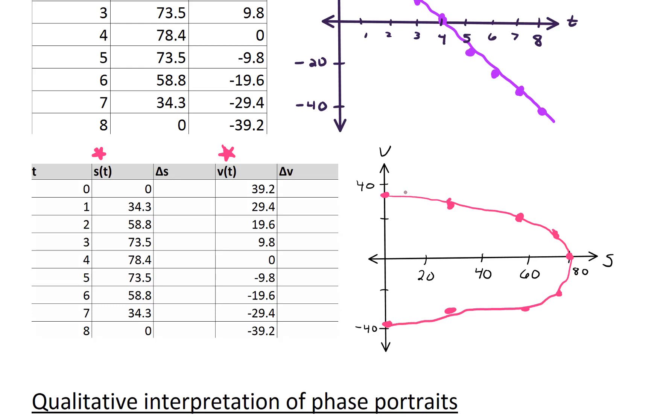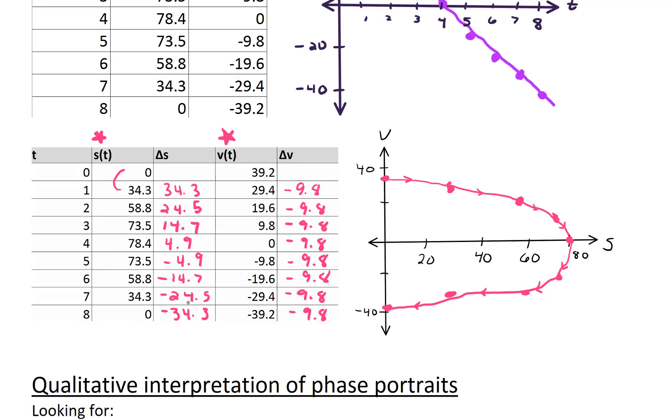Initial condition being whatever our initial velocity was. And there's a direction of flow here. And I'd like to consider that direction a little bit more. So if we look at the change in position and the change of velocity.